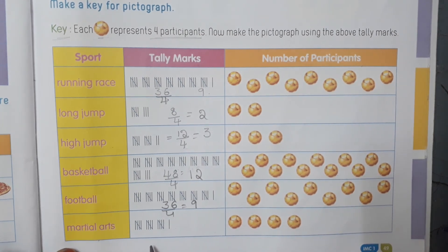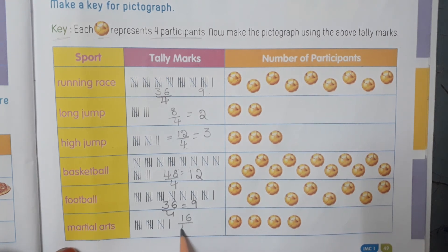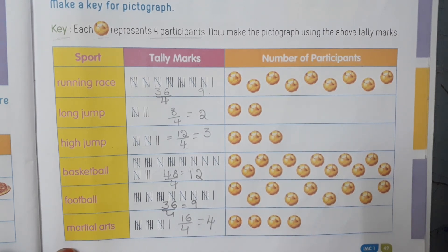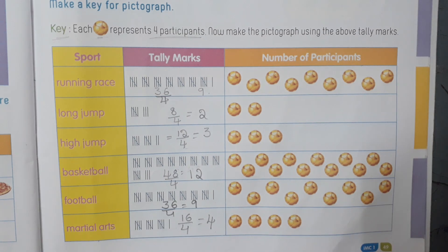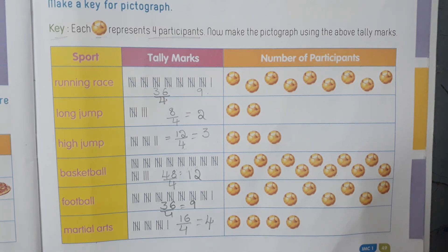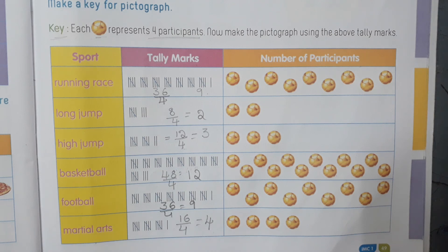For martial arts, sixteen divided by four — four fours are sixteen — so four pictures. Up to here we have completed how to make a pictograph and how to make a pictograph from tally marks. In the next video, we will learn about box charts, bar graphs, and pie charts.